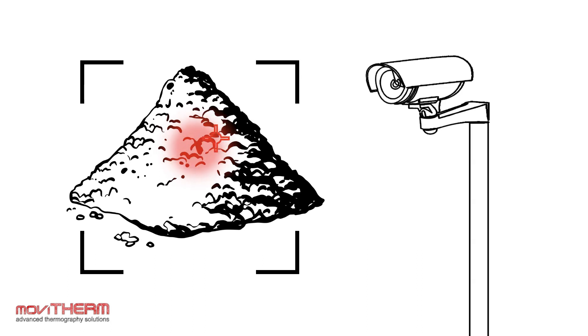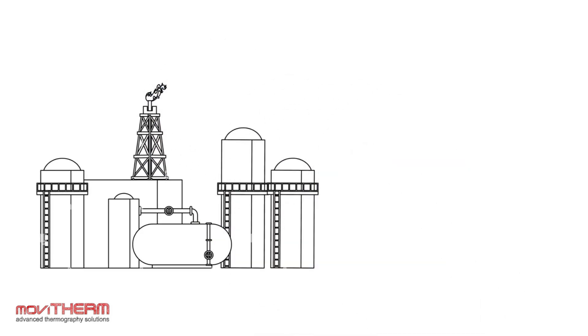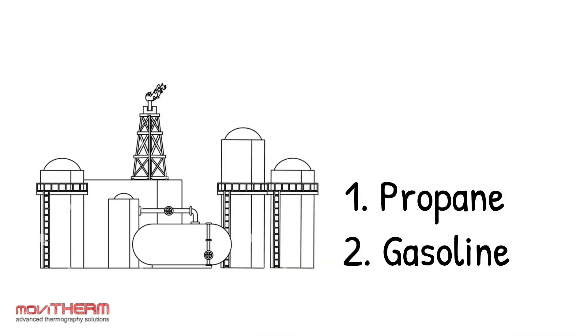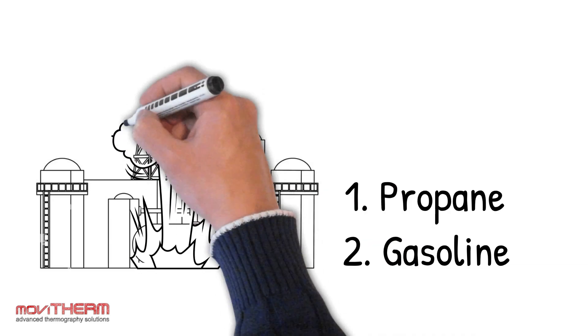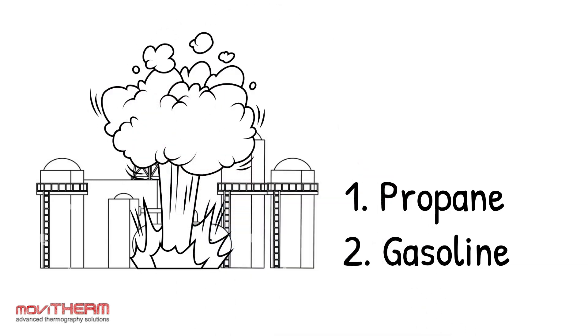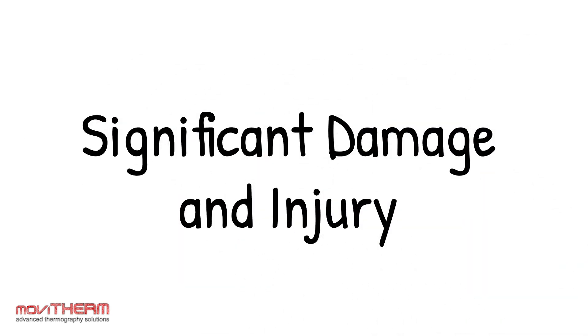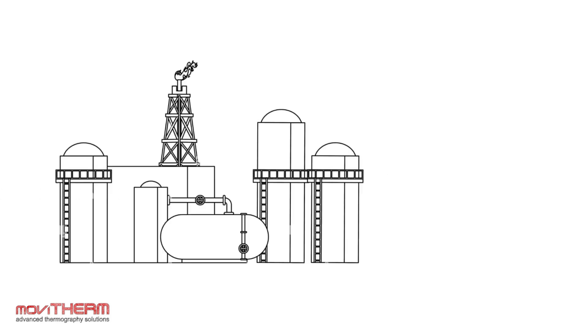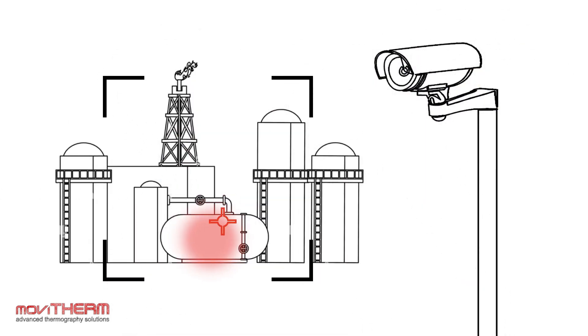Explosive combustion occurs when gaseous or liquid materials such as propane or gasoline are ignited and rapidly expand, resulting in an explosion. This type of combustion can be hazardous and cause significant damage and injury. Infrared cameras can detect the heat of an ignition source, allowing for early warning and combustion prevention.